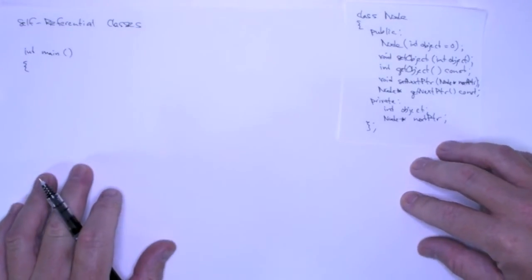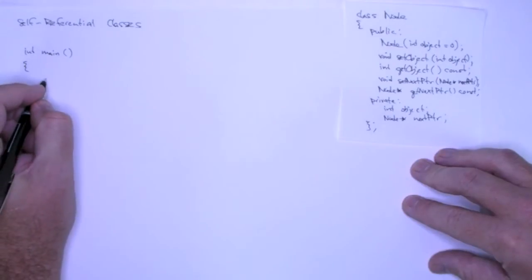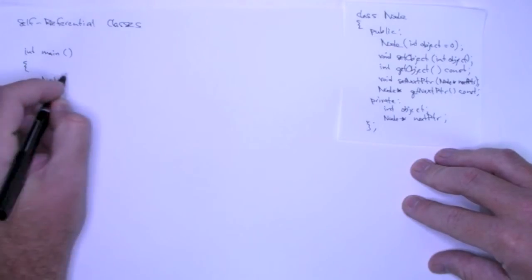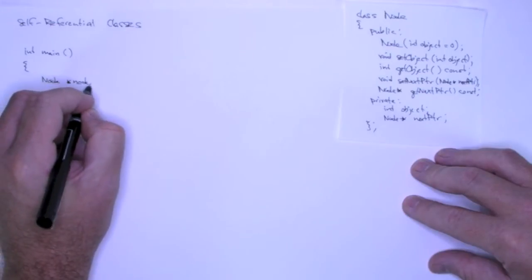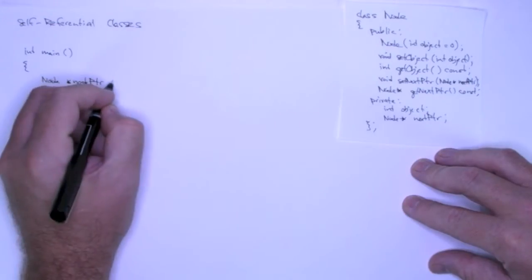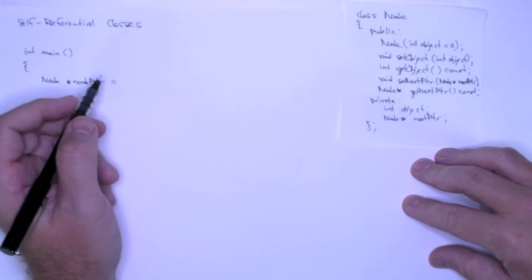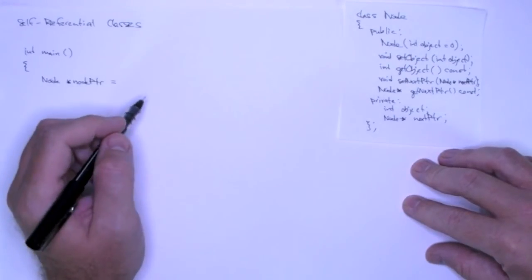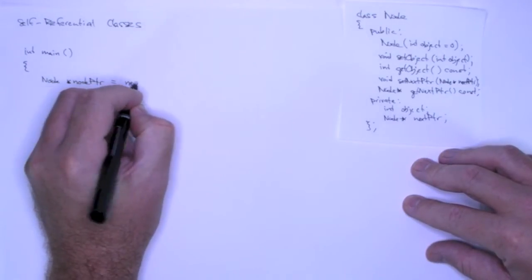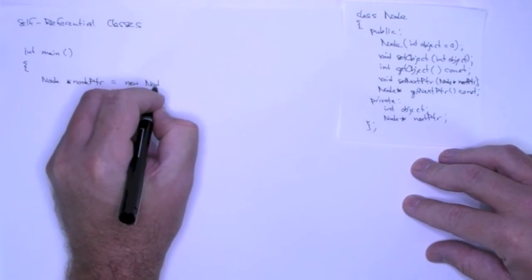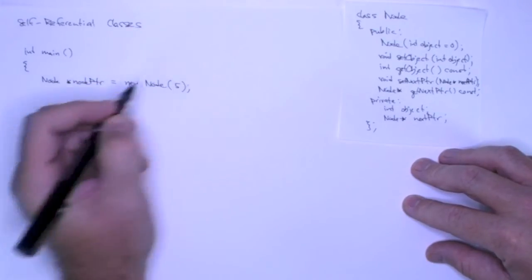I strongly encourage you to type this in and get it running. First thing I'm going to do is create a pointer to a node called node pointer. This stores an address, and I can use new to dynamically allocate an object and get its address. So to create a new node, I simply write new node and pass in the value five.